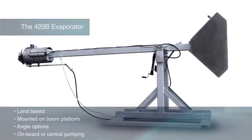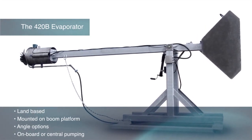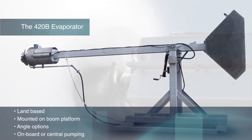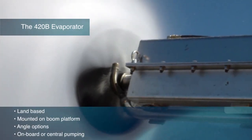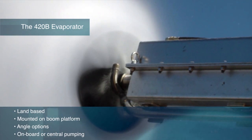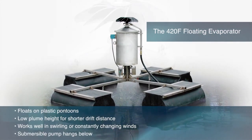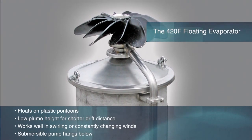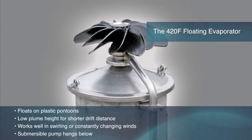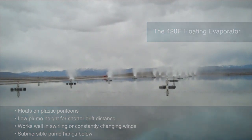The 420B evaporator is our land-based machine, mounted on a boom platform that can be aimed at differing angles. The convenient and simple onboard pump is the most popular water supply option, but central pumping to several systems is also available. The Cold Mist 420F evaporator floats on polyethylene pontoons. It has a low plume height for shorter drift distance and is extremely effective in swirling or constantly changing winds. Each machine is equipped with a submersible pump attached to the floating frame.